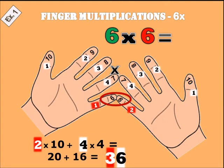You put the little fingers together. You count down and have two fingers, so two times ten is twenty. On the left hand we have four, and on the right hand we have four — four times four is sixteen. Twenty plus sixteen is thirty-six. Six times six equals thirty-six.